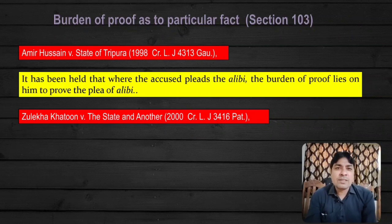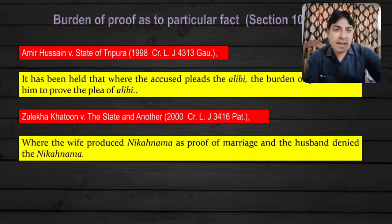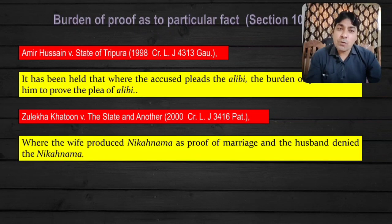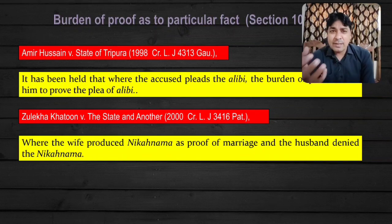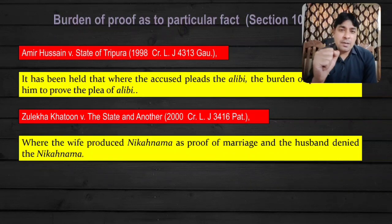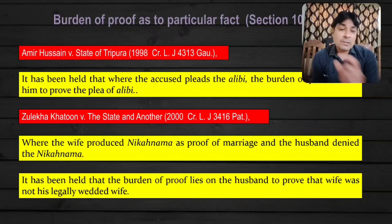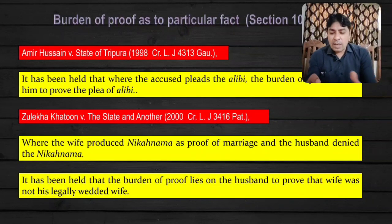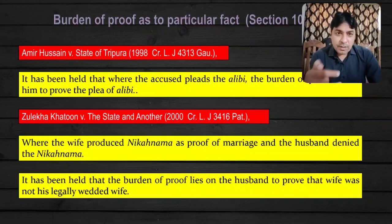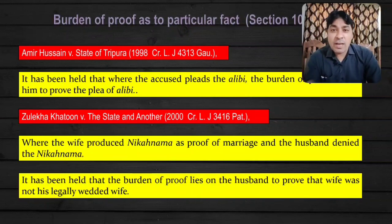Another case: Dhuleka Khatun versus the State and Another. In this case, the wife produced a Nikanama as proof of marriage and the husband denied the Nikanama. It has been held that the burden of proof lies on the husband to prove that the wife was not his legally wedded wife. Toh yahan par wife ne Nikanama pesh kiya, lekin husband deny kar raha hai — toh burden of proof husband par rahega — husband ko yeh prove karna padega ki woh uski legally wedded wife nahi hai.